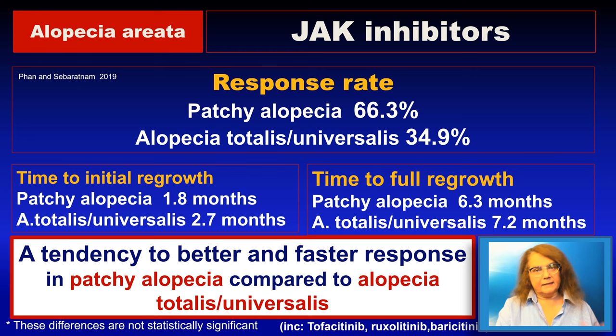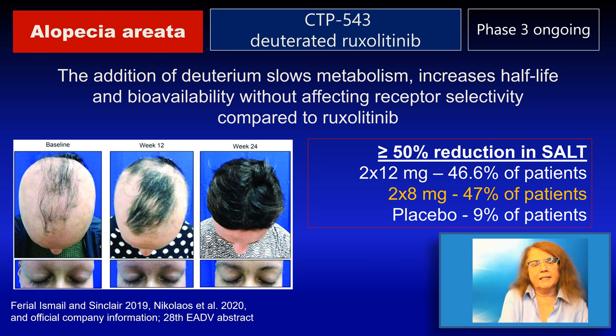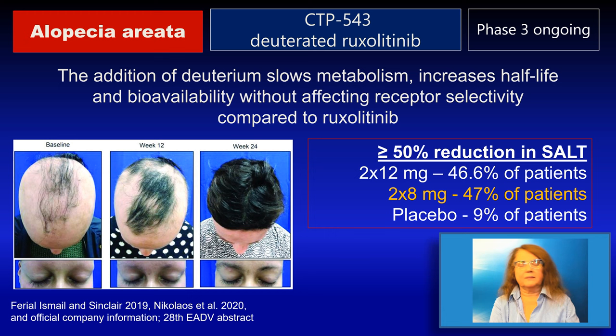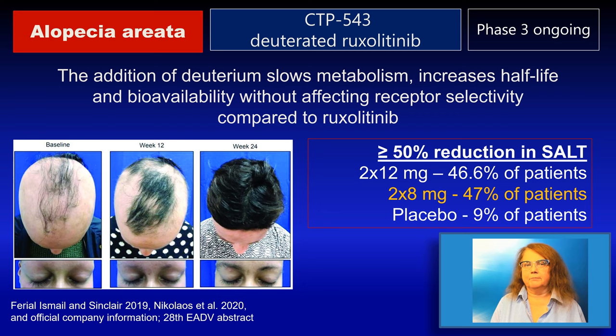There is a tendency toward better and faster response in patchy alopecia, but the good news is that many patients with alopecia totalis also respond. A modified version of ruxolitinib differs from the classic form by having a longer half-life and higher bioavailability, while still being a JAK1 and JAK2 inhibitor. It has shown significant efficacy with over 50% reduction in SALT score — the percentage of scalp affected by the disease — with highest efficacy of 47% at the dose of 2.8 mg.